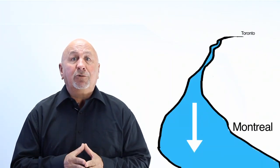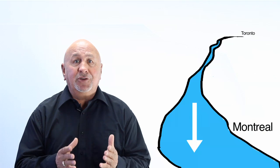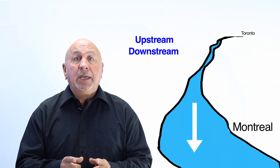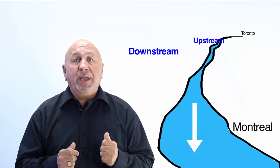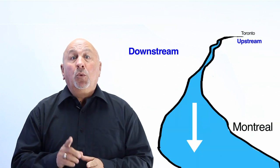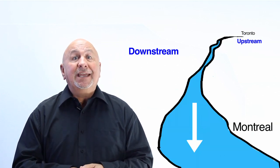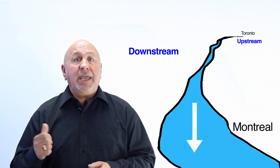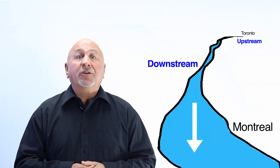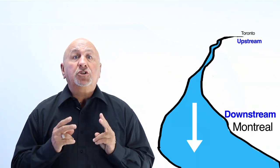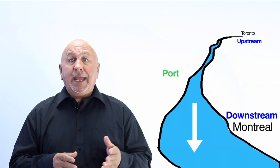Lateral Buoy Systems. To understand and use the lateral buoy systems, it is important to understand the meaning of upstream and downstream. Upstream is the end of the waterway from where the water flow originates. Where the water flow ends is the opposite end of the waterway, called downstream. The lateral buoy system marks two sides of the channel: port and starboard.